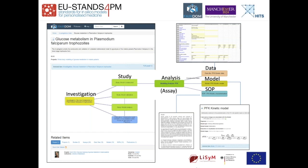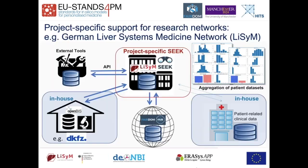All that can be structured using standards like the ISA standard. When we bring all this kind of data together with our systems and services — like we do in networks such as the liver systems medicine network in Germany — it's a large scale network where people from clinics, wet lab researchers, and modelers come together to arrange their data, build computer models, simulate them, and so on. That's highly complex, and all this data has to come together. For this, you need systems, and these systems only work when there is a certain degree of standardization of the data and the metadata.